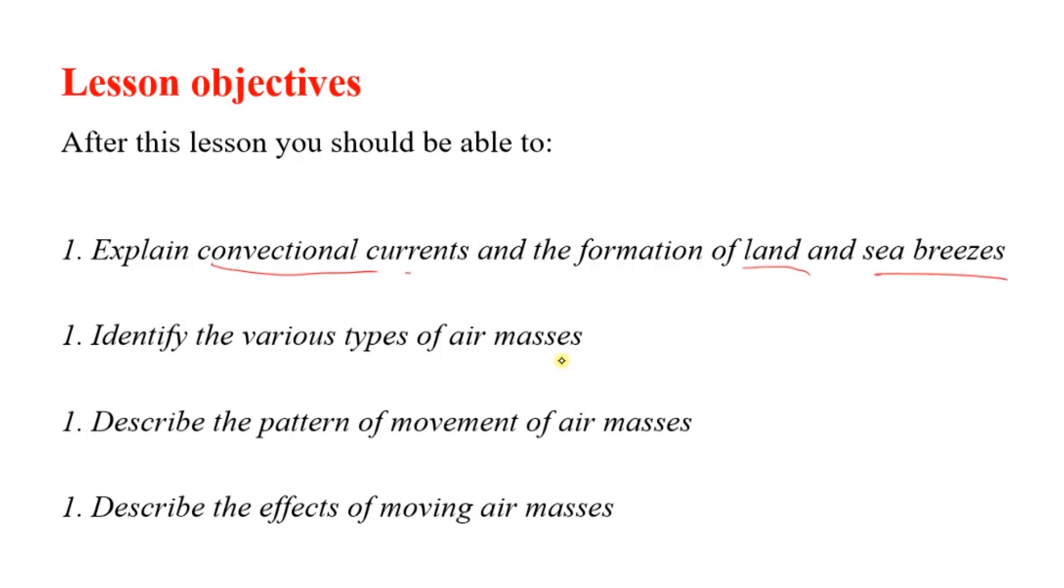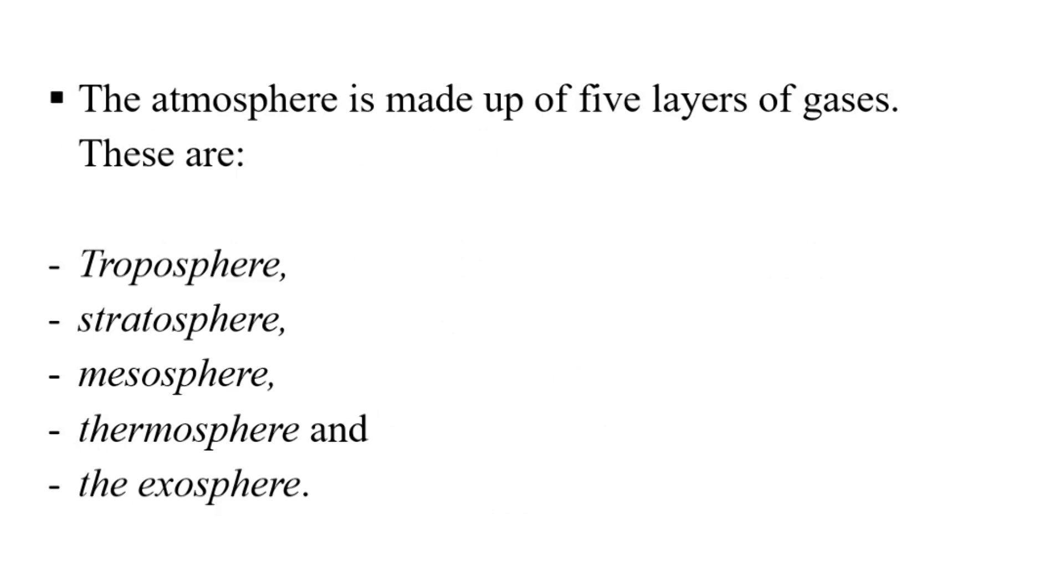Let us now look at the atmosphere which surrounds us and what it implies. The atmosphere is made up of five layers of gases around us. So when you hear of the atmosphere around us it is actually in layers. And these layers are the troposphere that is the one immediately around us,